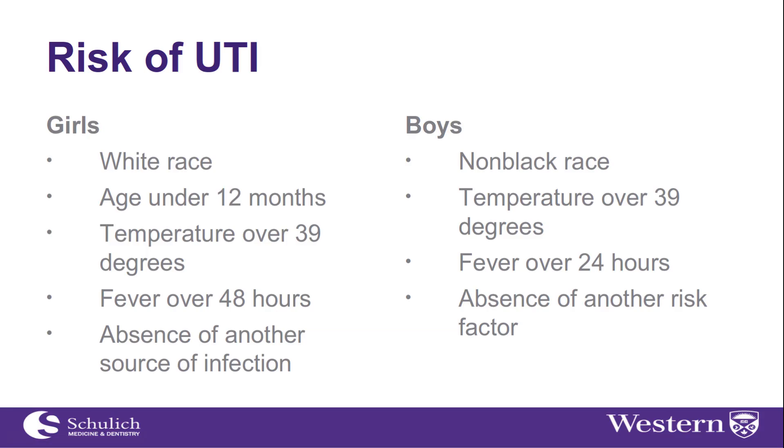So who are at risk? These are the two categories by this paper. Now remember, this paper is a bit biased because it is American data. So this may not pertain to Canadian patients as well. In their study, they found the following: Girls who are Caucasian, age under 12 months, had a temperature of greater than 39 degrees, or fever for greater than 48 hours, and no other source of infection were a prime candidate for UTIs. Where in the males, they were non-black, so that could be Hispanic, Caucasian, Oriental. Everybody but non-black race. Temperature over 39 degrees, fever for greater than 24, so a shorter duration of fever, and absence of other risk factors, you have to consider UTI.